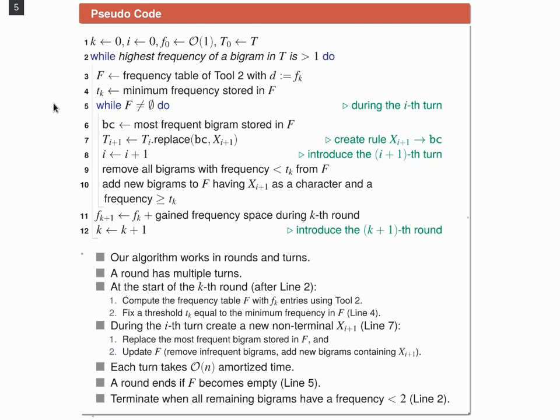In total, we end the algorithm whenever there is no longer any bigram that has a frequency of more than one.